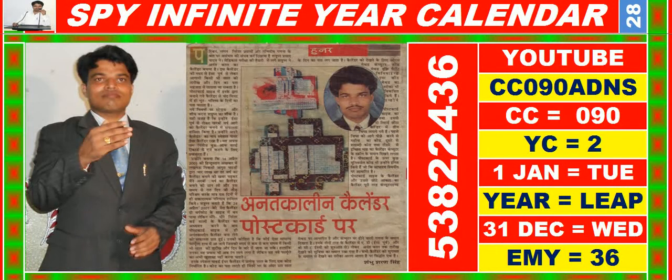Good morning, dear friends. You are heartily welcome in Master Key of Success. In this video you are watching SPY Infinite Year Calendar for the year having calendar code equal to 090, as well as you may search it on YouTube by CC090, ADNS.